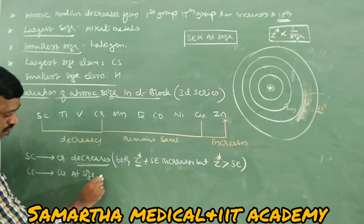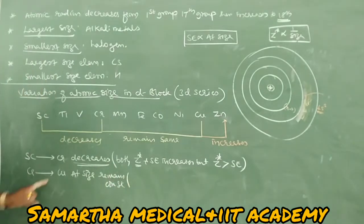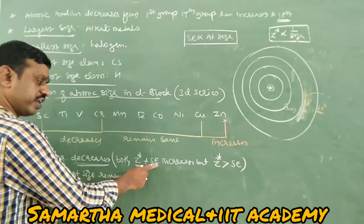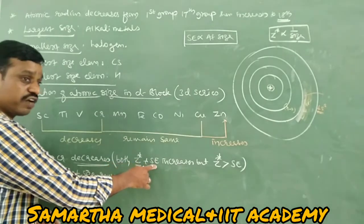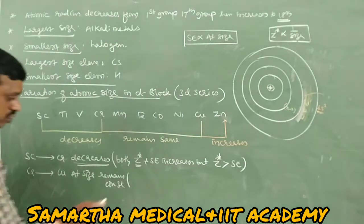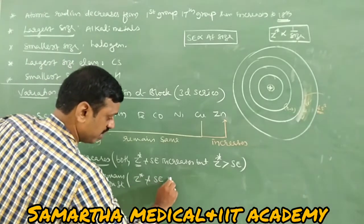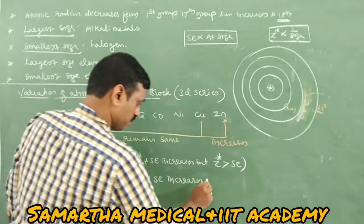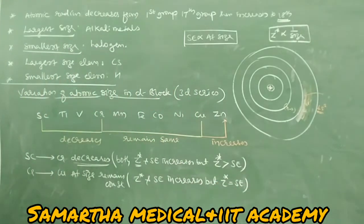From chromium to copper, atomic size remains constant because both Z* and screening effect increase equally — the increment in Z* equals the increment in screening effect, so they mutually cancel, and size remains constant.